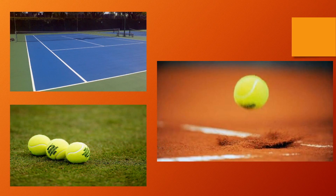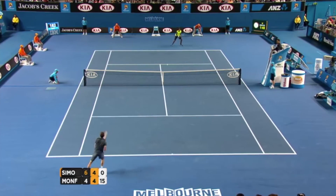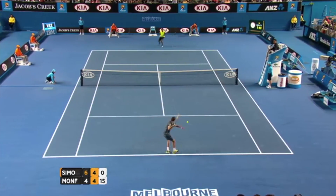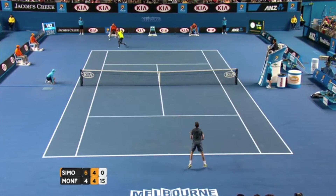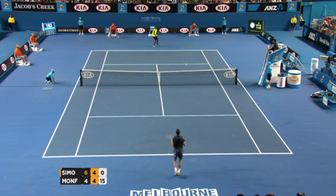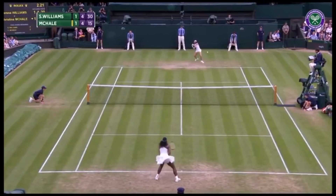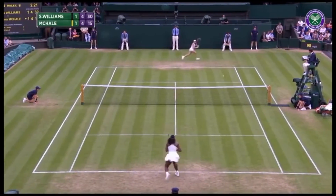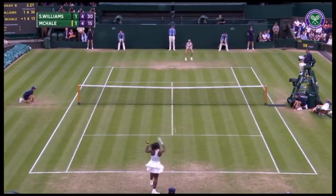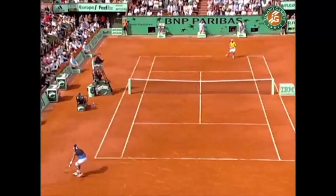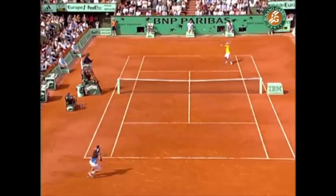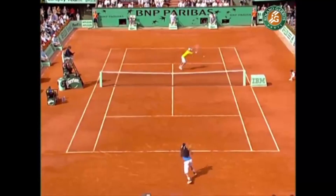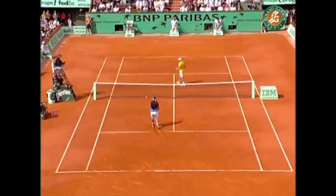Modern day tennis requires athletes to alter their biomechanical behavior due to varying playing surfaces including acrylic, grass, and clay. Acrylic courts are often concrete or asphalt surfaces coated with several layers of covered acrylic paint. Grass is a soil-based lawn with top class courts specified by the type of grass used. And finally, clay is constructed using natural stone that is crushed to varying degrees and bound with water.